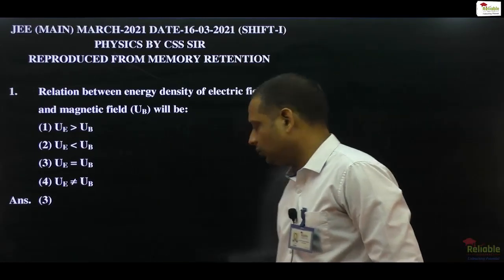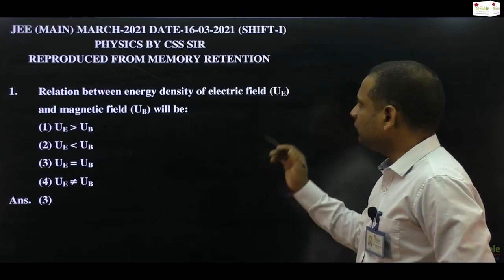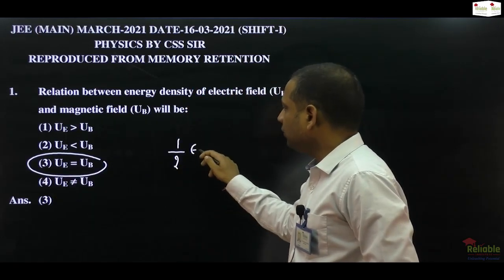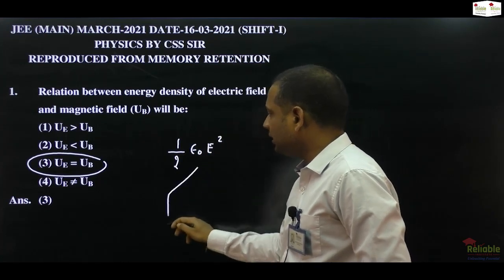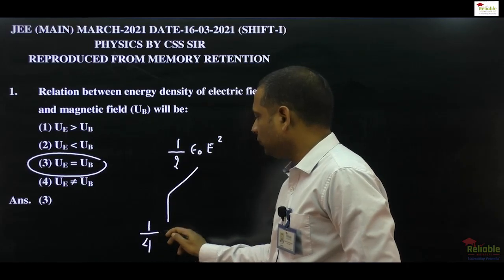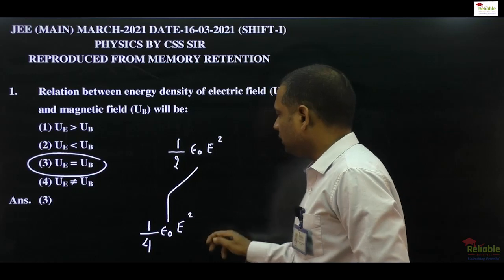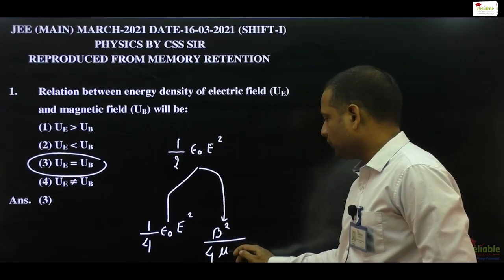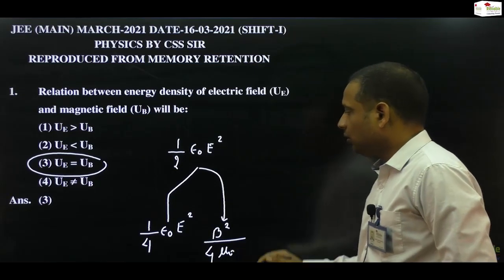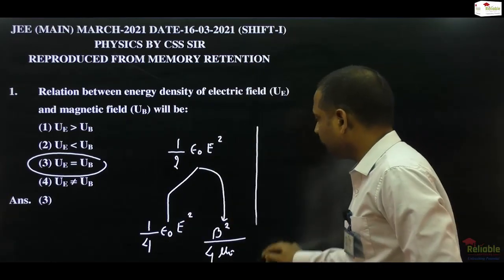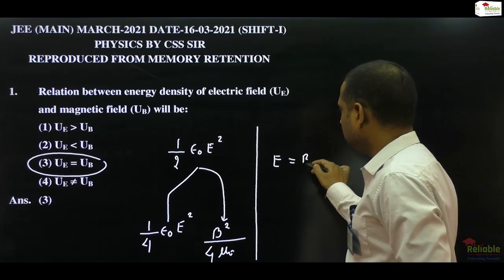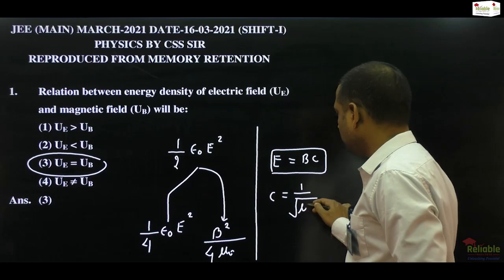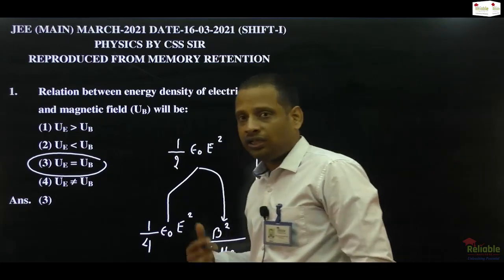You have to find out the relation between energy density of electric field (UE) and magnetic field (UB). So we know that both energies are equal. Energy density value is half epsilon naught E square. This is total energy density - it's 1 by 2 portion, 1 upon 4 epsilon naught E square in electric field, and the second part is B square divided by 4 mu naught in magnetic field. We know that B and E can be converted: E is equal to B into C, and C is 1 upon square root of mu naught epsilon naught if you are writing velocity in air or vacuum.